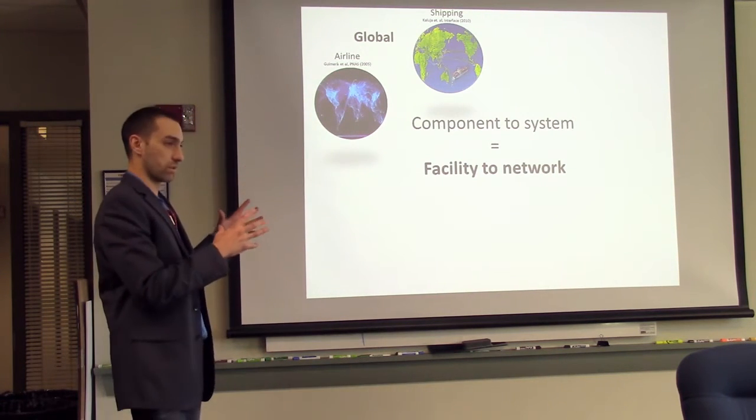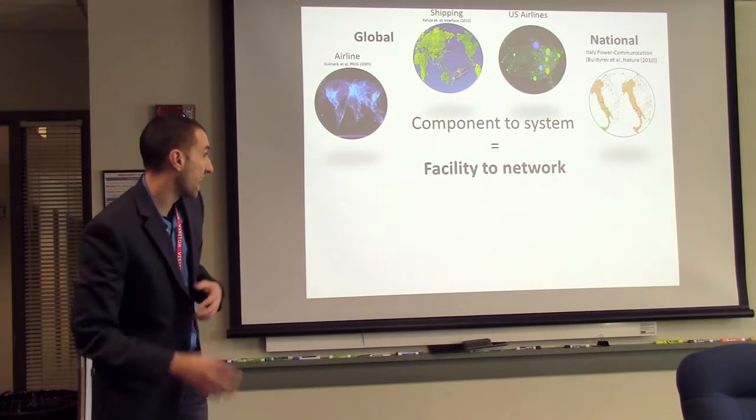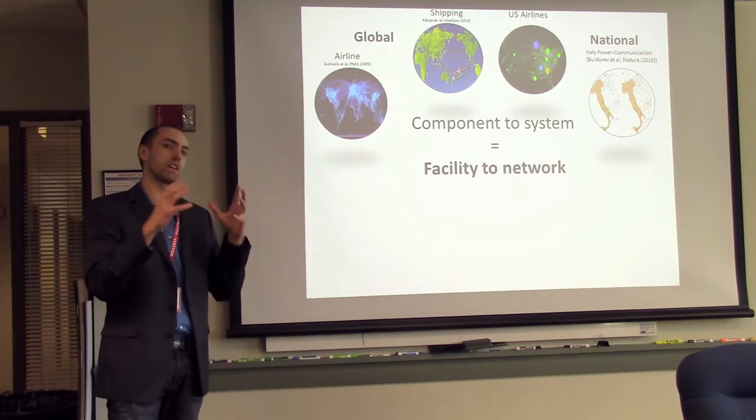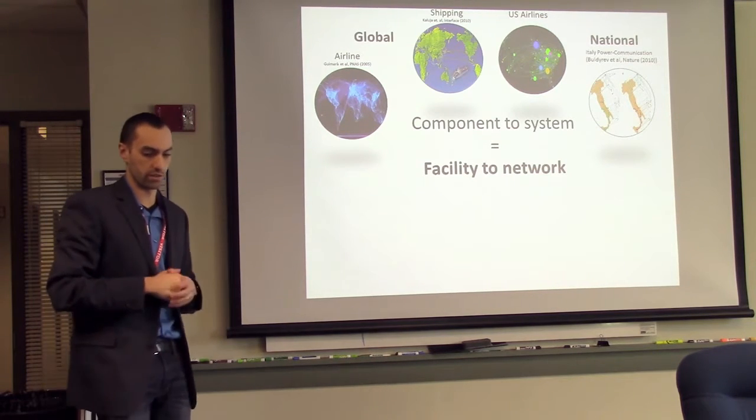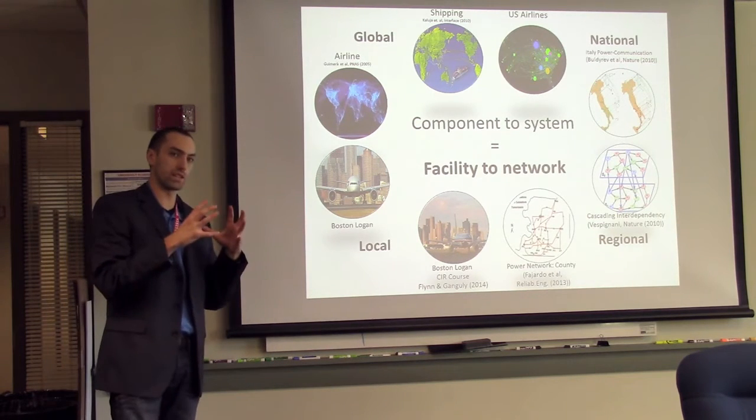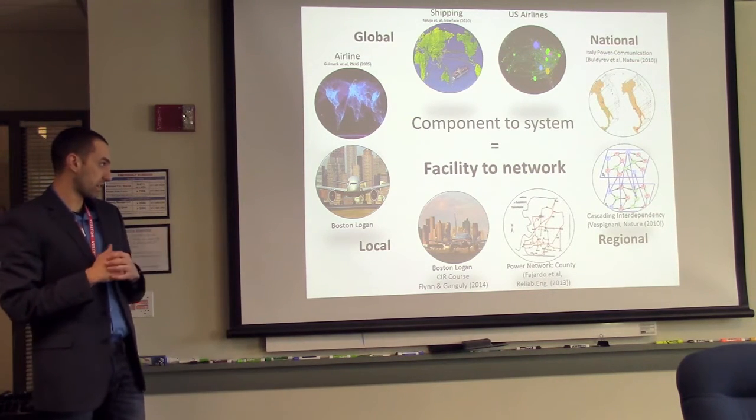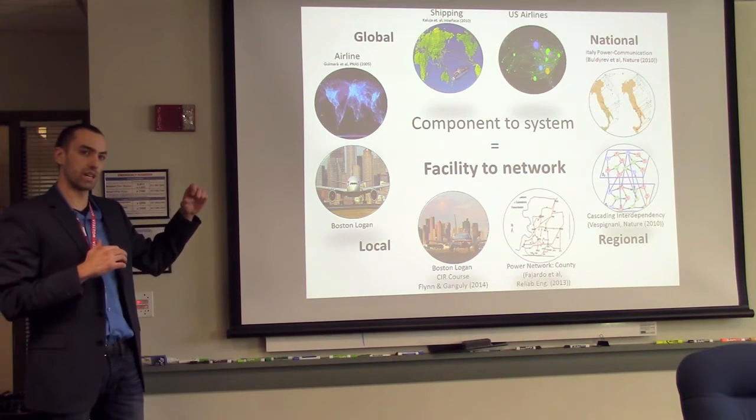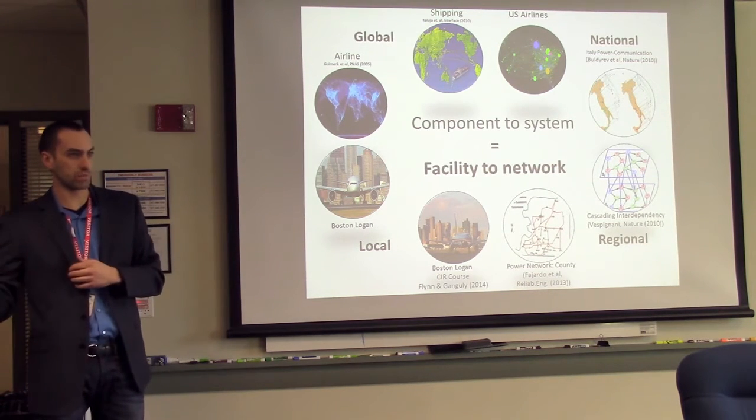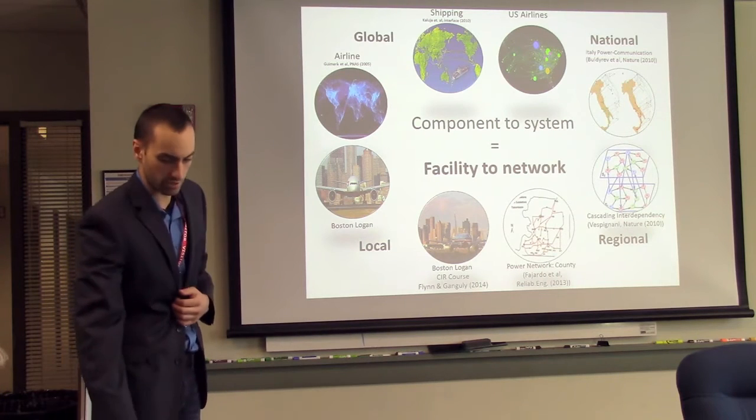So we can think of networks as global networks, like a global airline network, the global shipping network, we can think of them at multiple scales. We can think of them at national scales, the US airlines network. We can even think of national or global scale networks where we're looking at two networks and how they behave together. So how the power and communication networks interrelate to each other, regional networks and then all the way down you can actually think of Boston Logan itself in some sense as a network. Beautiful thing about network science and what I'm about to explain here is that it scales very well at these different levels and it gives us a systematic way of thinking about these things from the top down as well as, and it complements what a lot of these things have been done from sort of the bottom up perspective.